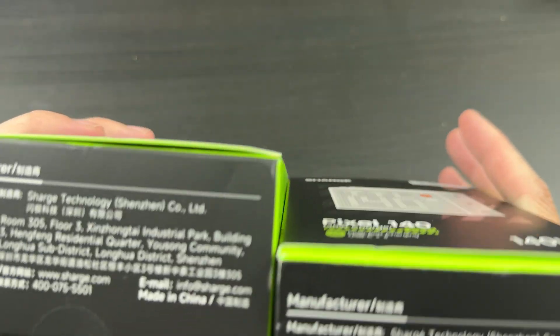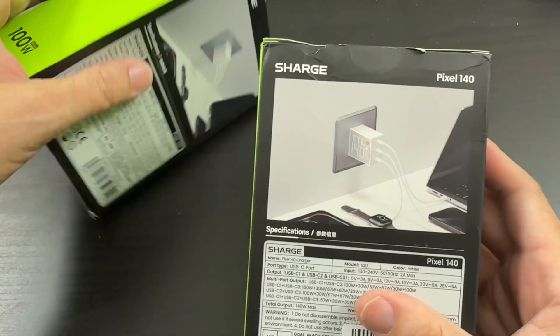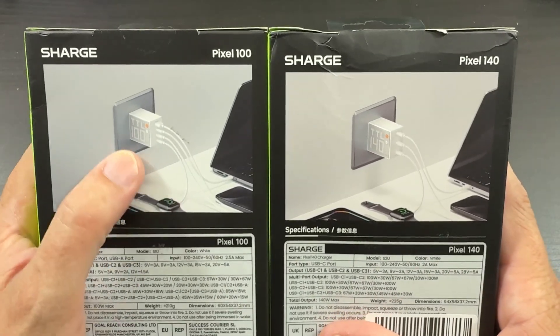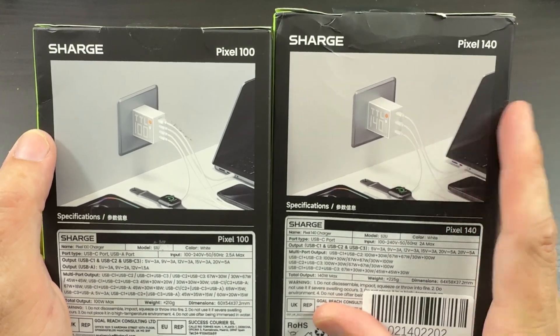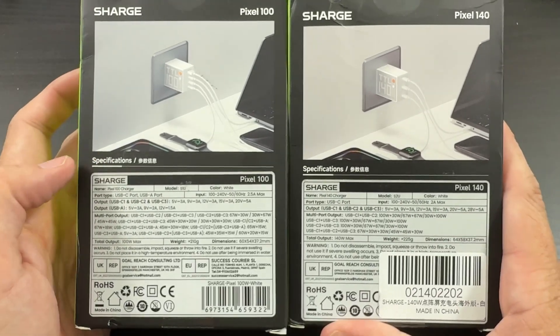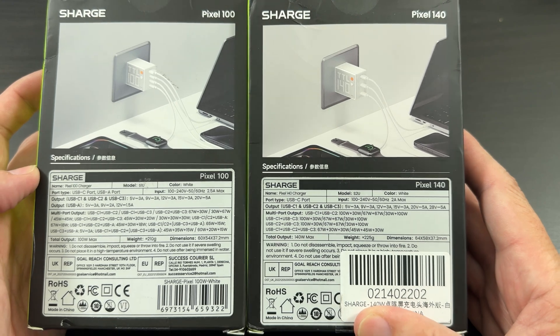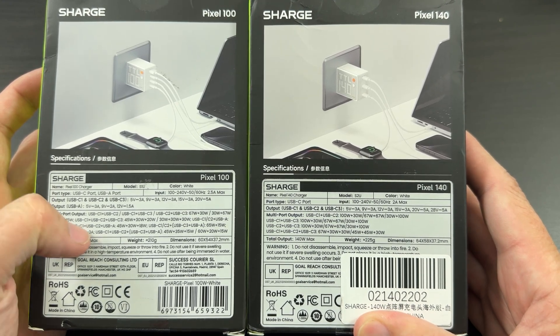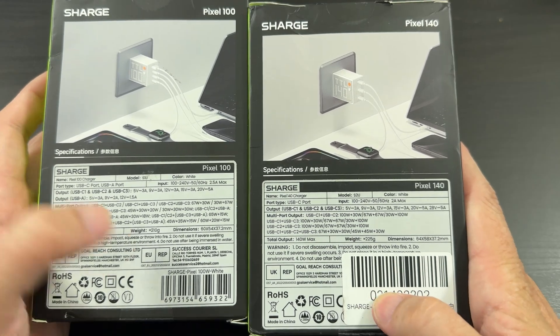So on the bottom, we just have the information such as the manufacturer. And on the back, we've got an example of three USB-C and one USB-A. On this one, we just have the three USB-C. We have all the specifications for both of these. So it gives you all the different outputs if you have more than one connected. That's pretty cool. And then we have the UPC.